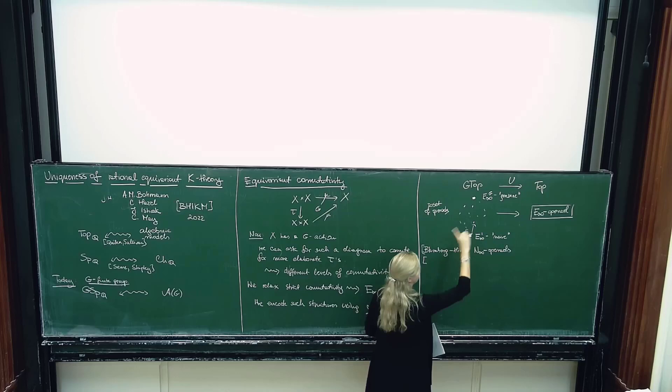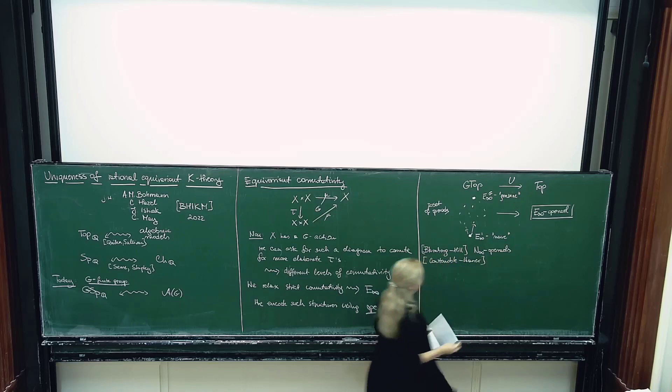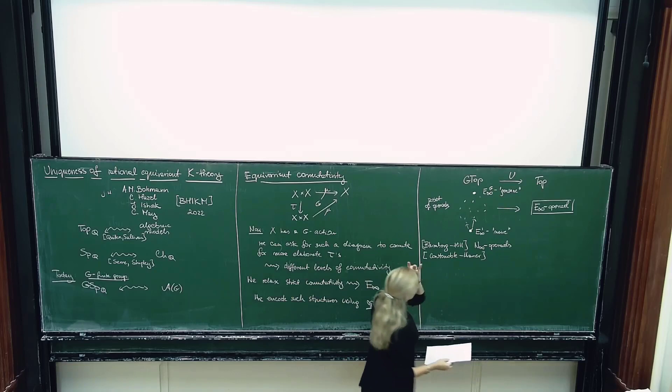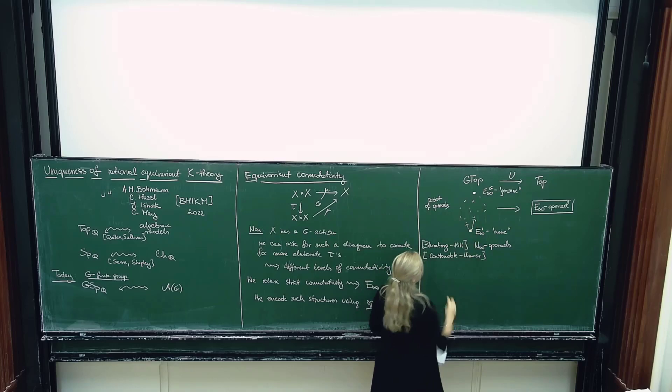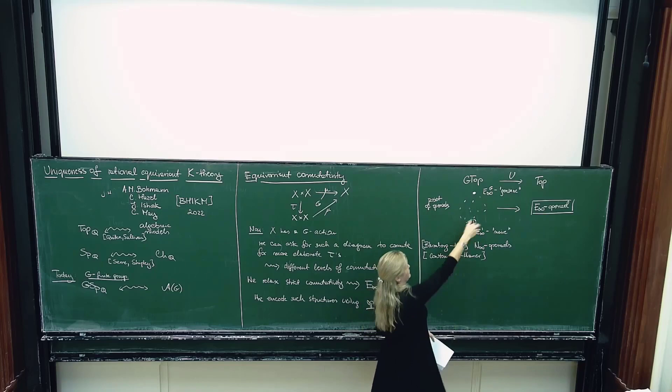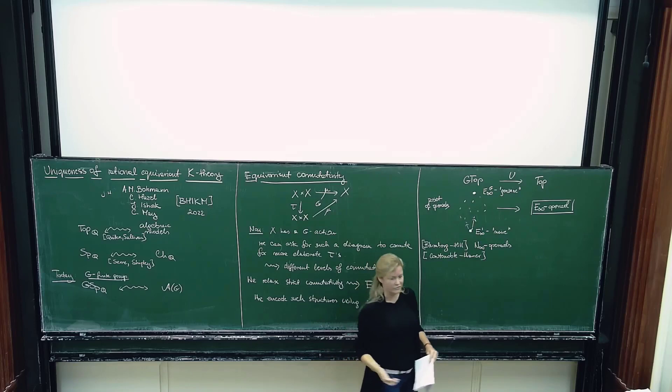I should probably mention that the first work on different G-equivariant infinity operads was done by Costenoble and Waner, but they only worked with linear isometries and perhaps the little disk. The intermediate ones are not going to be that important for today's talk, so I'm not going to really discuss them. The most naive and the most genuine ones are the ones we're going to consider.